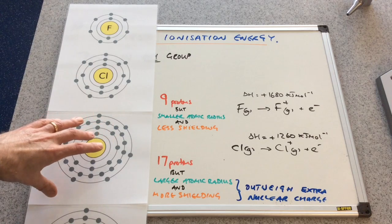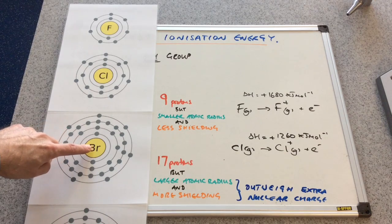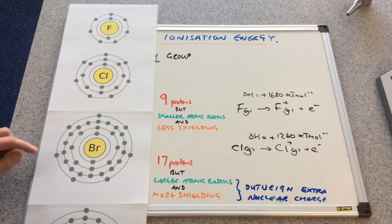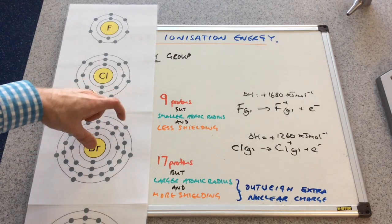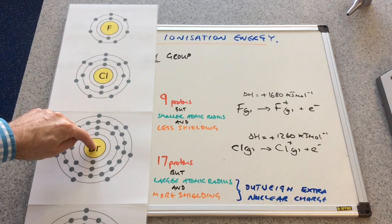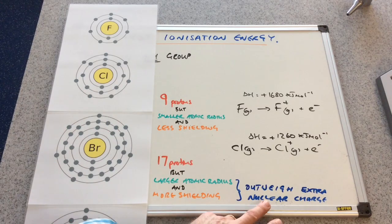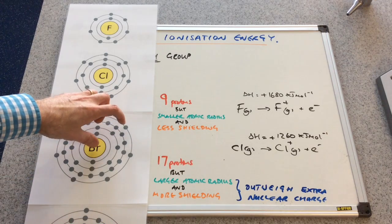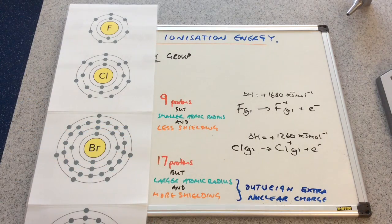Looking at bromine: it has more protons — 35 protons in its nucleus — so it has a greater nuclear charge. But it has an extra shell shielding the attraction between the nucleus and the outermost electron, and it also has a greater atomic radius. So even though it has a greater nuclear charge, the increased shielding and increased atomic radius outweigh that, meaning less energy is required to remove the outermost electron. Bromine's first ionisation energy is 1,140 kJ/mol — less again.